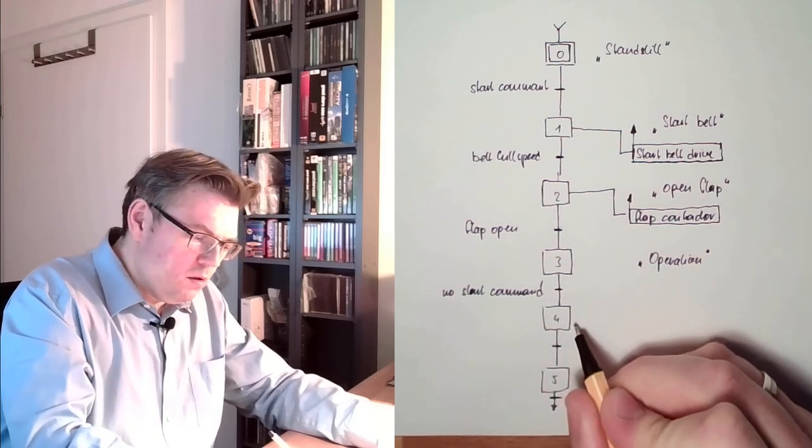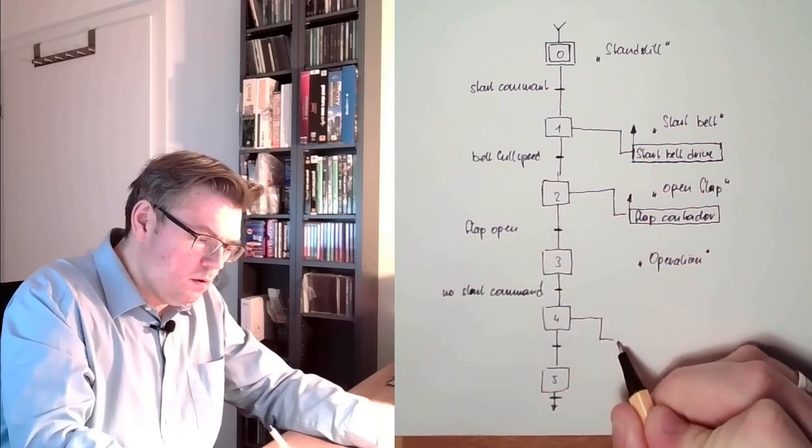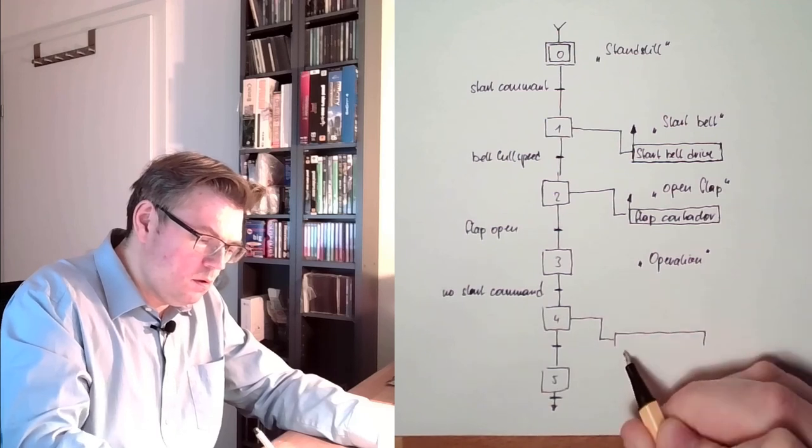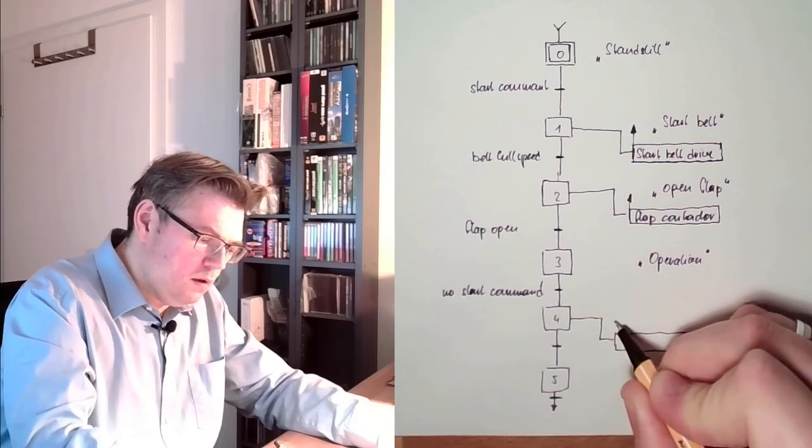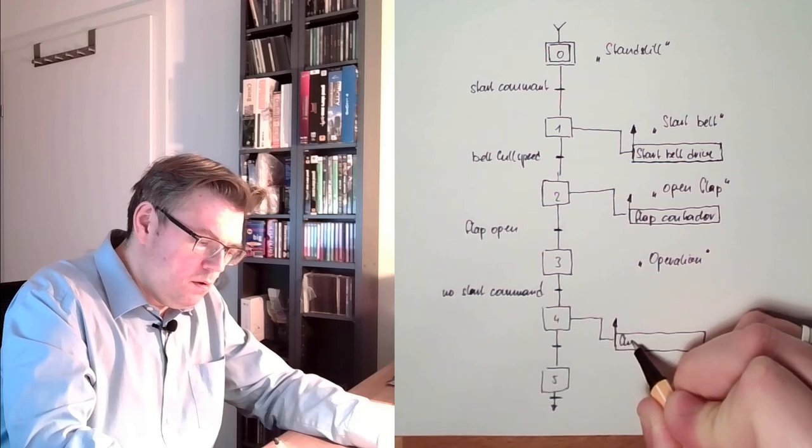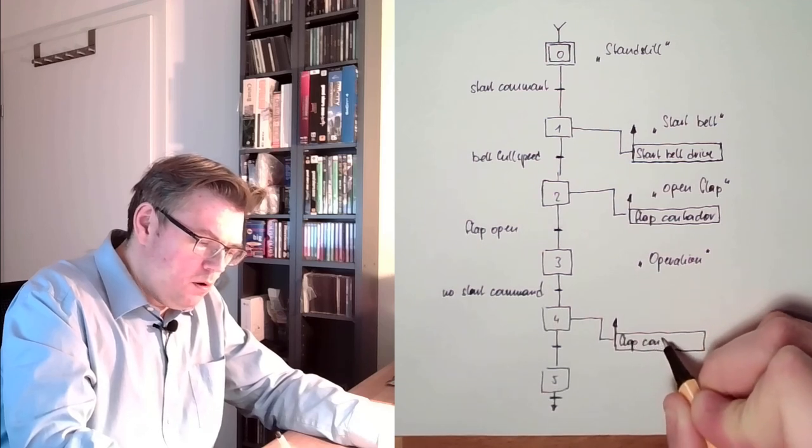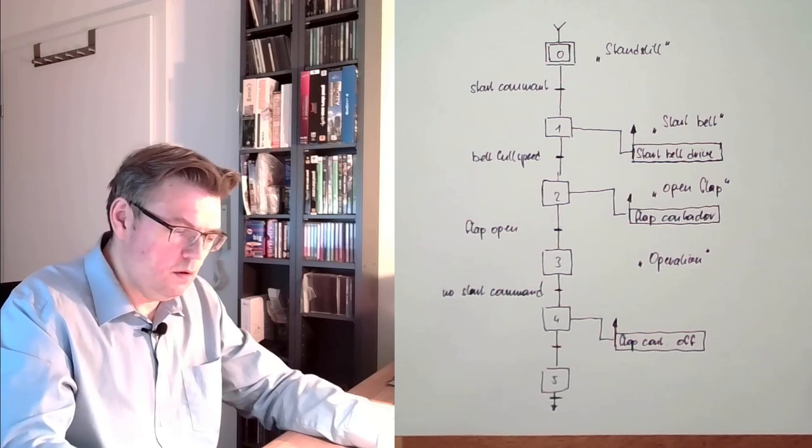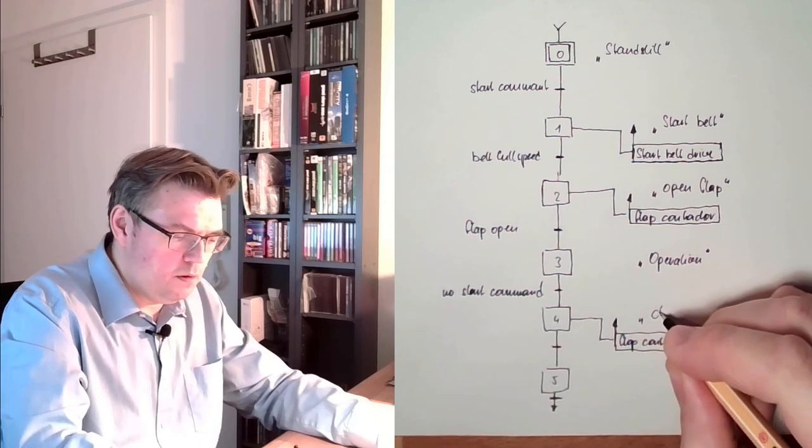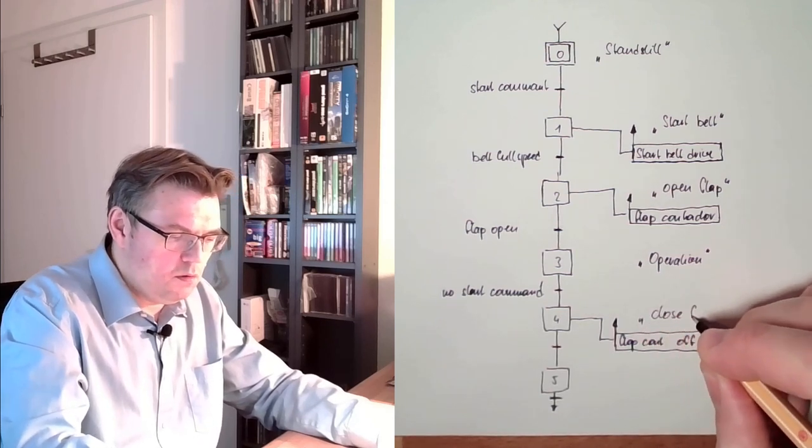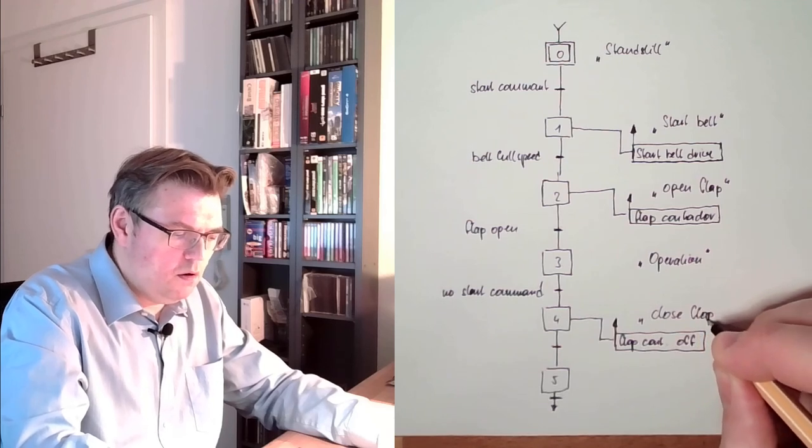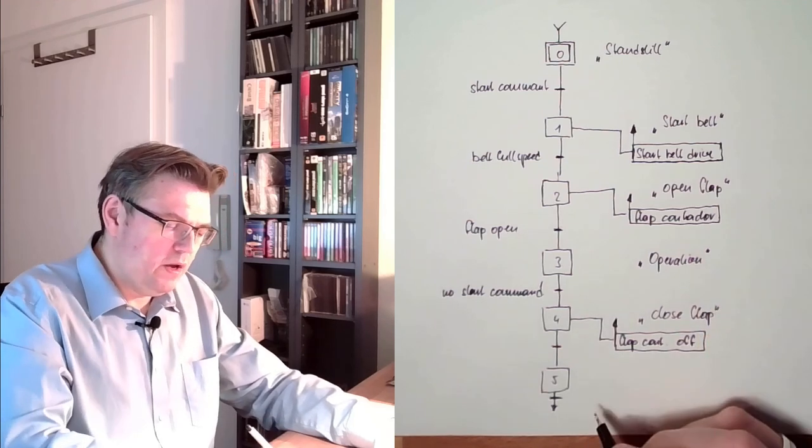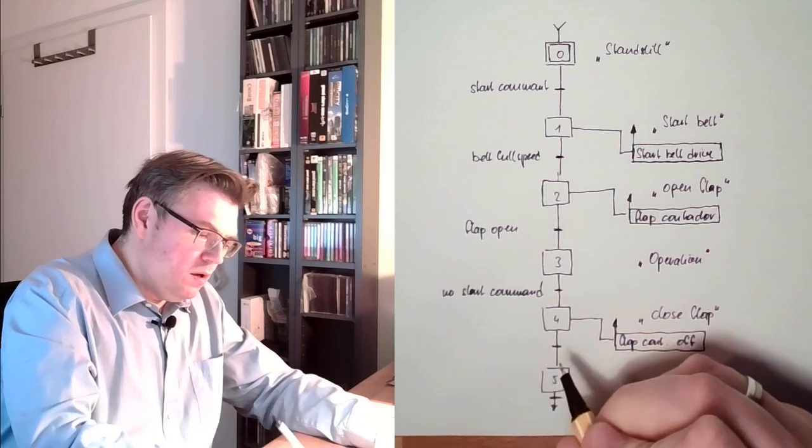Then the first thing. Command. Flap contactor off. Close flap is the name. The command of this step. And the fifth step. Then here. Flap closed. Transition. Last step.